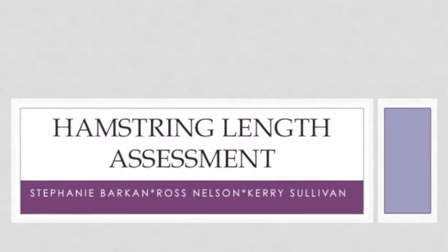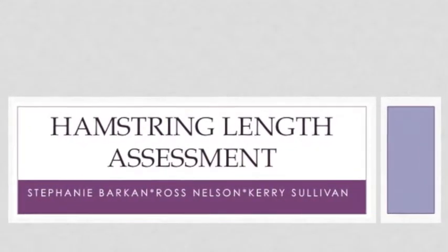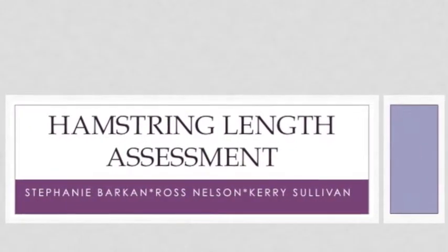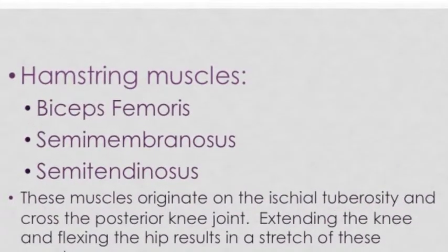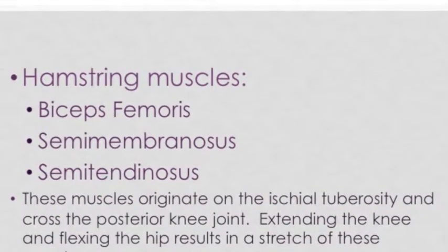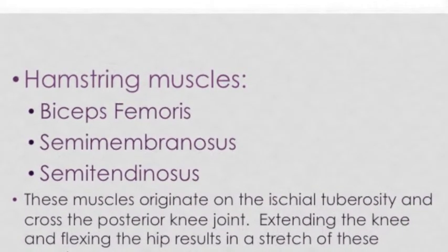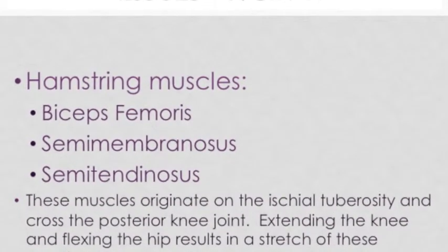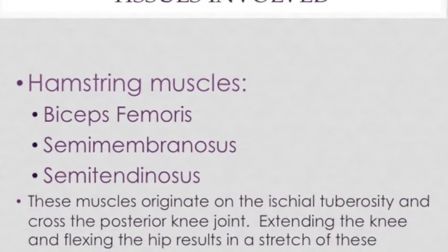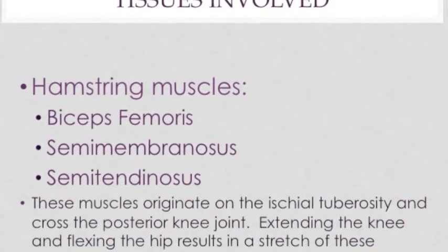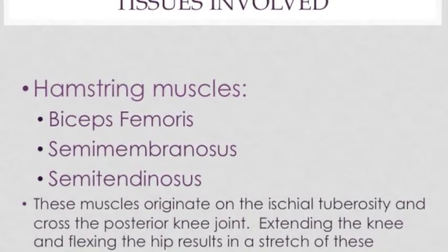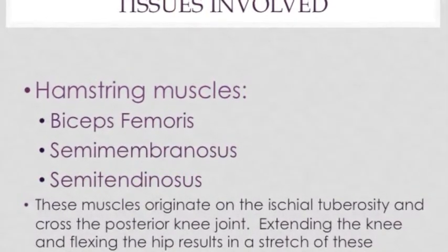Hamstring length assessment. The tissues involved in measuring hamstring length are the biceps femoris, semimembranosus, and semitendinosus.